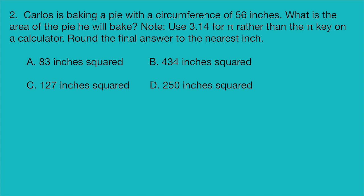Question two. Carlos is baking a pie with a circumference of 56 inches. What is the area of the pie he will bake? Note, use 3.14 for pi rather than the pi key on a calculator. Round the final answer to the nearest inch. Is it A, 83 inches squared? B, 434 inches squared? C, 127 inches squared? Or D, 250 inches squared?